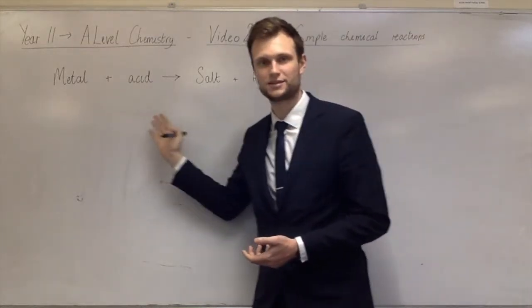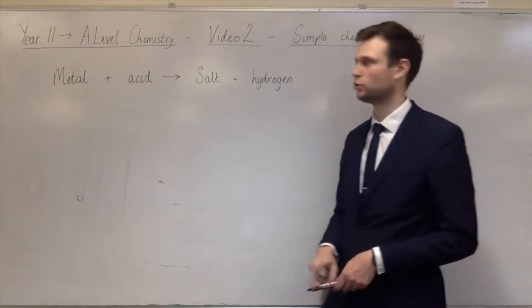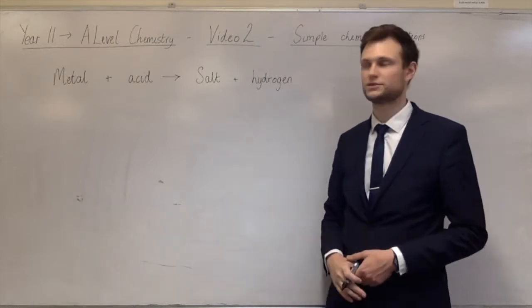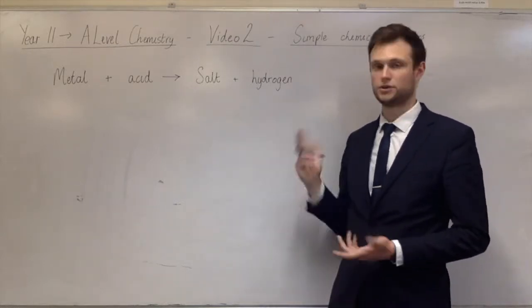Let's start with that one. Metal plus acid makes salt and hydrogen. So a salt is an ionic compound, it's formed from the metal and the anion in the acid. So if it was magnesium and hydrochloric acid, you'd get magnesium chloride as your salt and hydrogen gas.